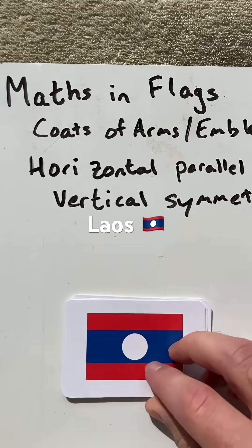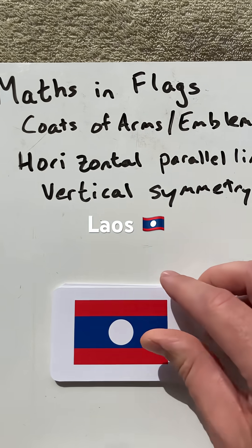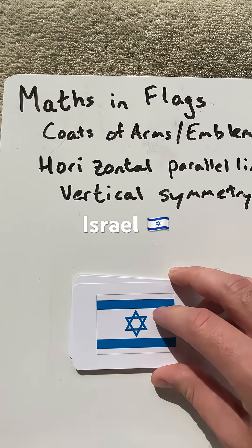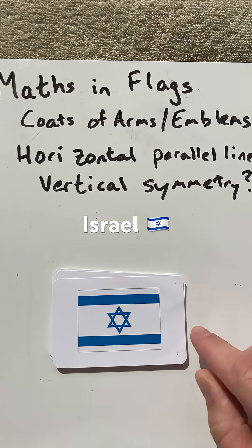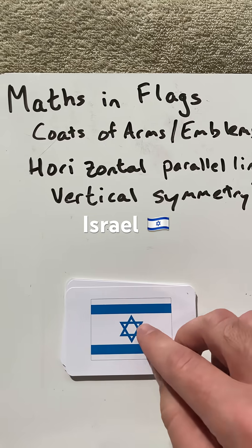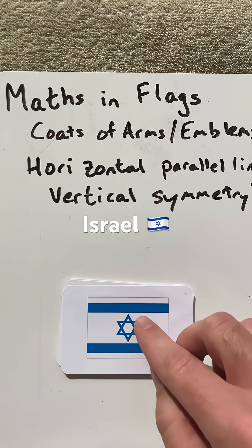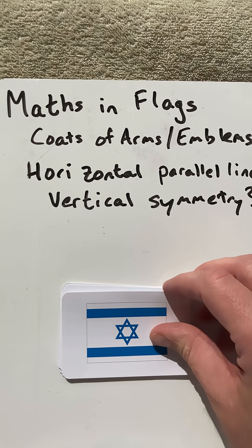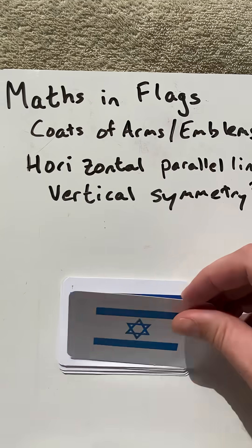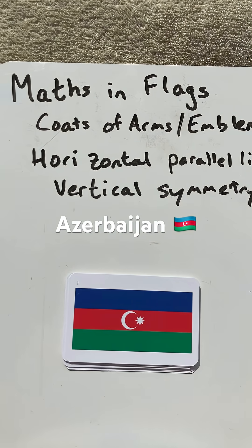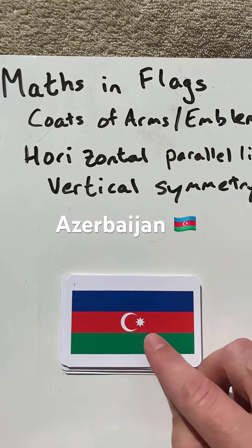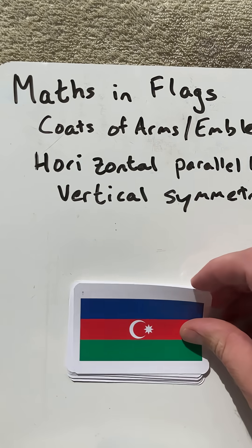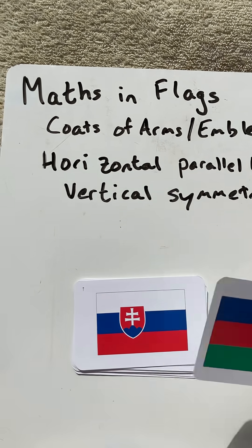Laos absolutely has a vertical as well as a horizontal line of symmetry. Israel, the same — vertical and horizontal line of symmetry. You can see even the Star of David has order-six rotational symmetry. And then we have Azerbaijan, because of the Crescent and the Star, it's not a vertical line of symmetry.